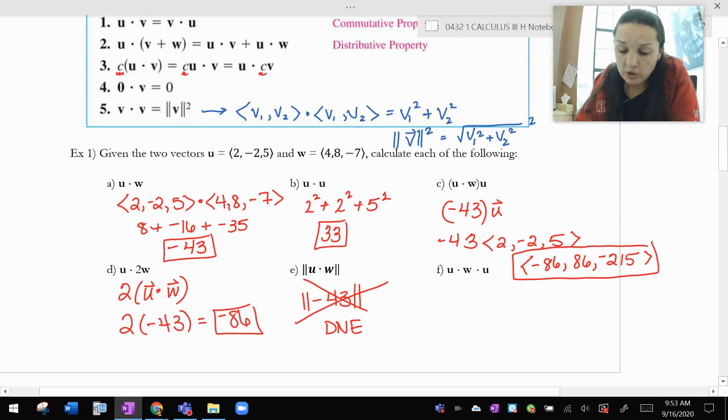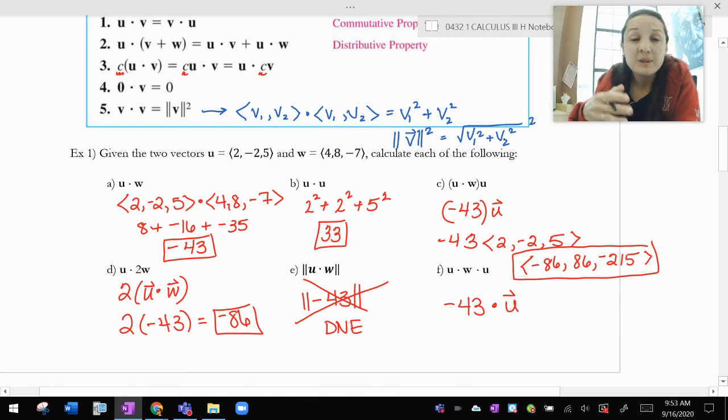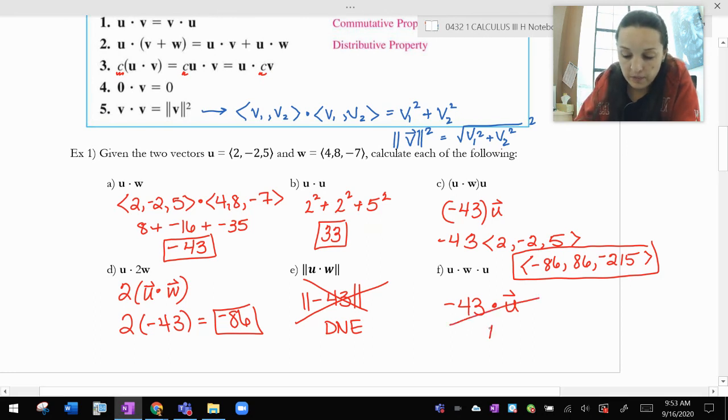And then u dot w dot u. U dot w is negative 43 dotted with the vector u. No, I can't do that either. I can't dot a scalar with a vector. I can multiply a scalar and a vector, but I can't dot a scalar and a vector. So same thing here. This is really a nonsensical thing.